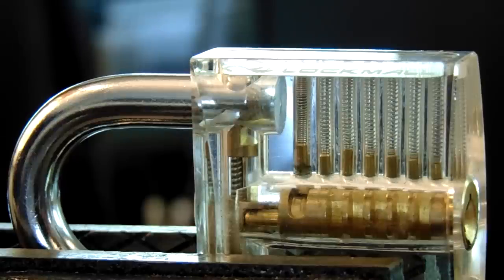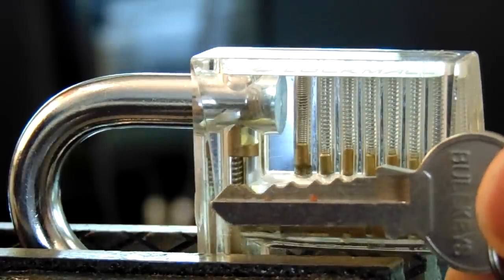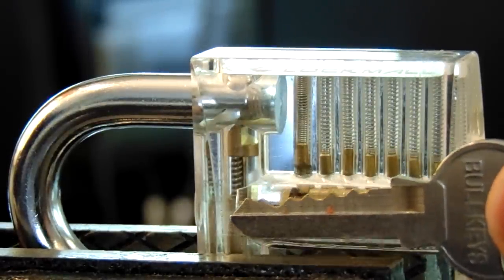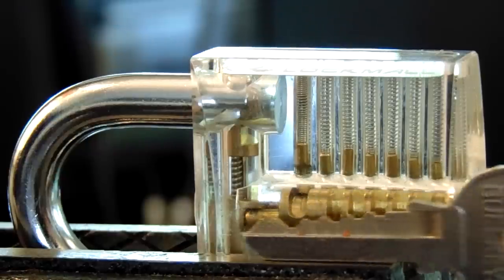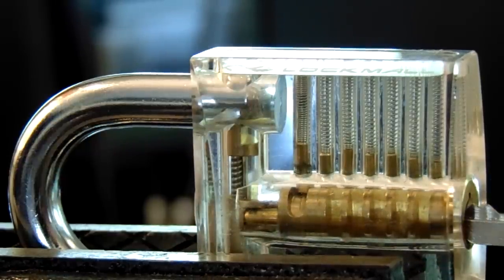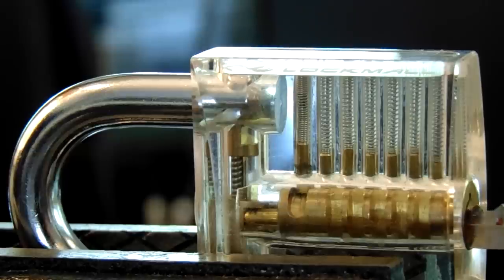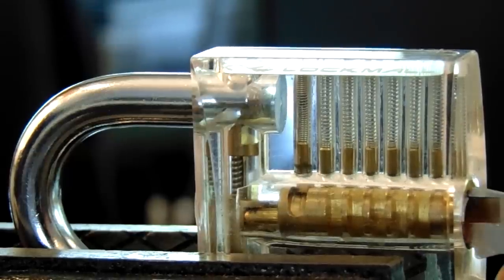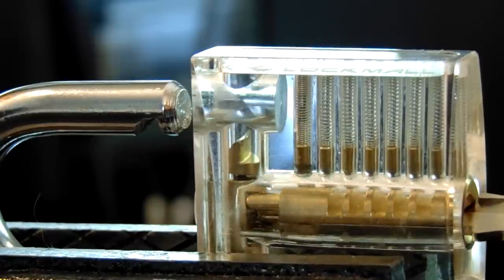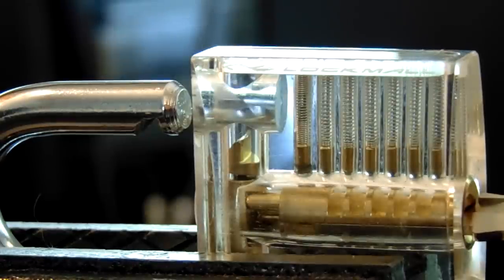Now here's an example of the key to this lock. So you can see that each key pin corresponds to the cut on the key. Now when I insert the key, you can see that the key pins will push up the driver pins up and out of the way. And now you can turn the lock and it is open.